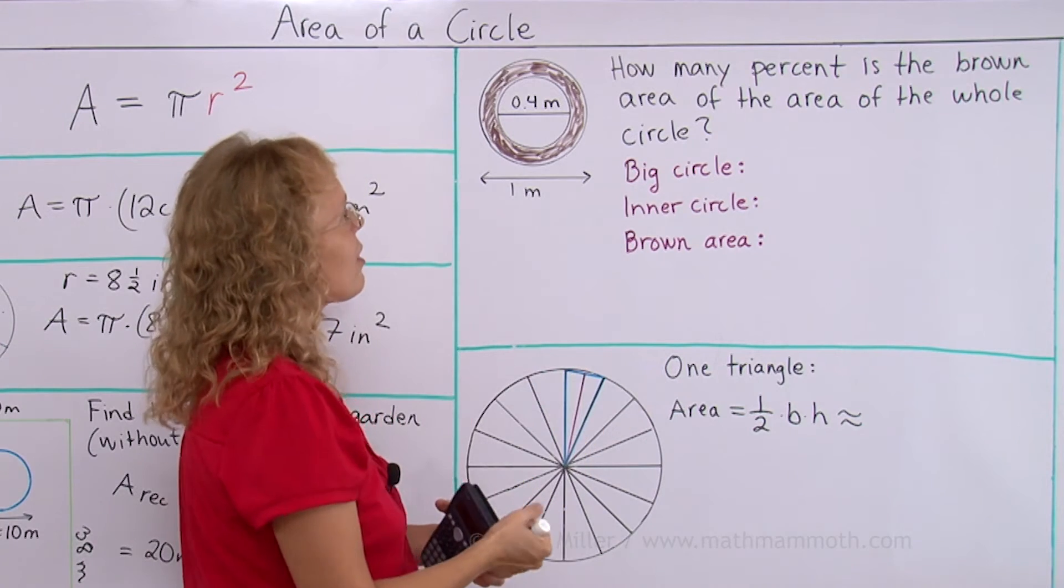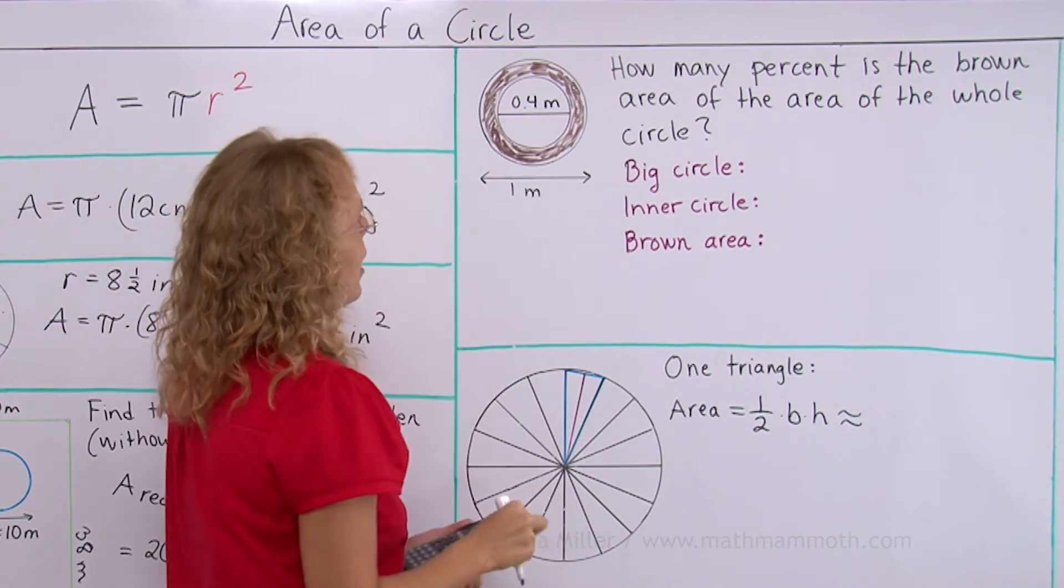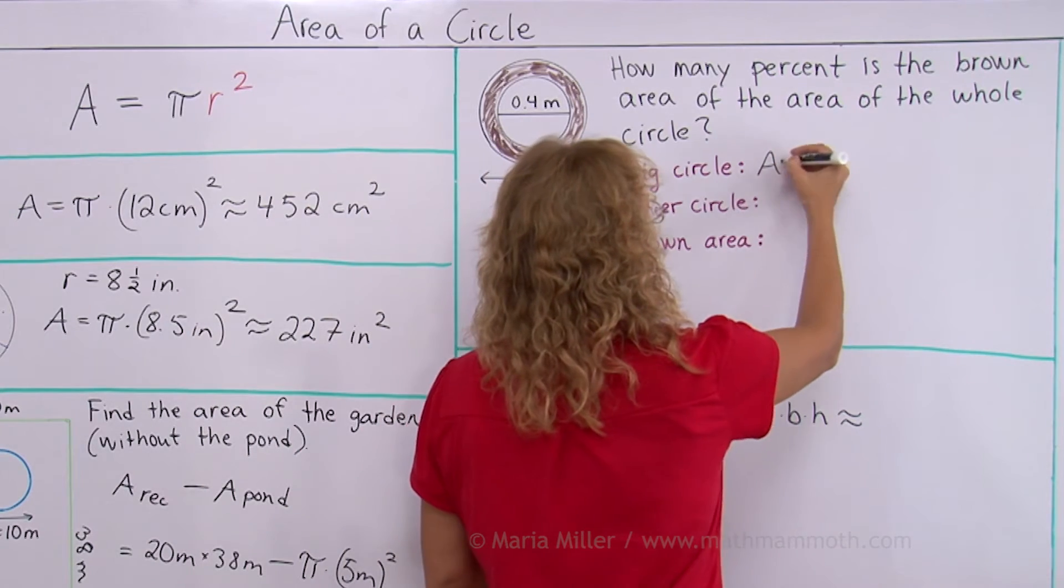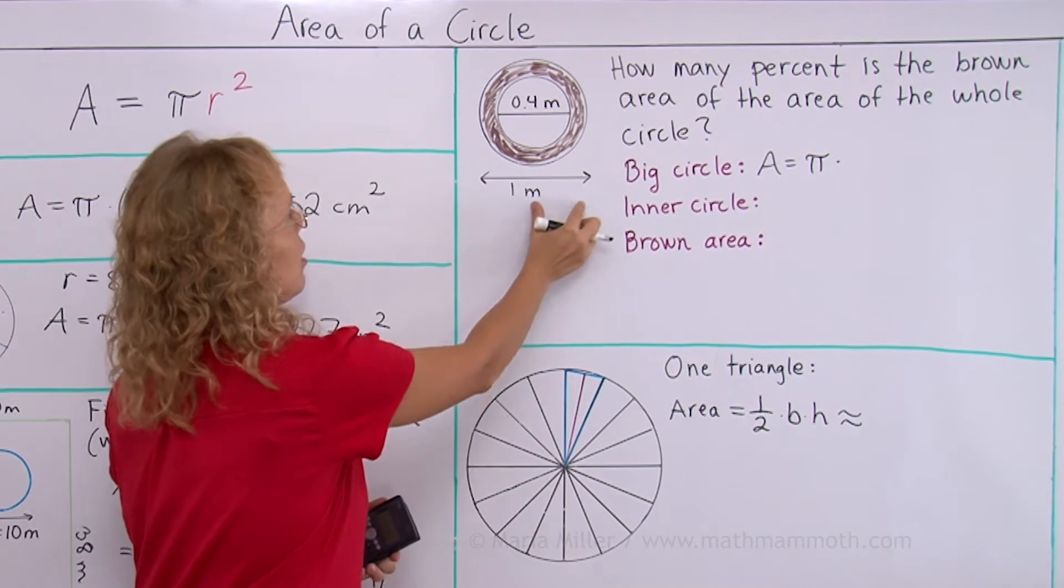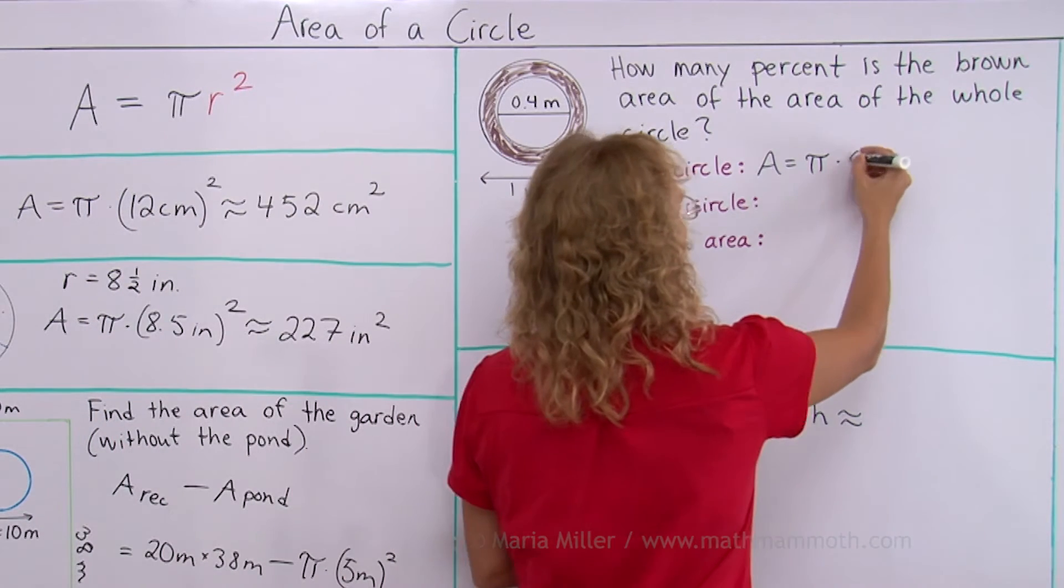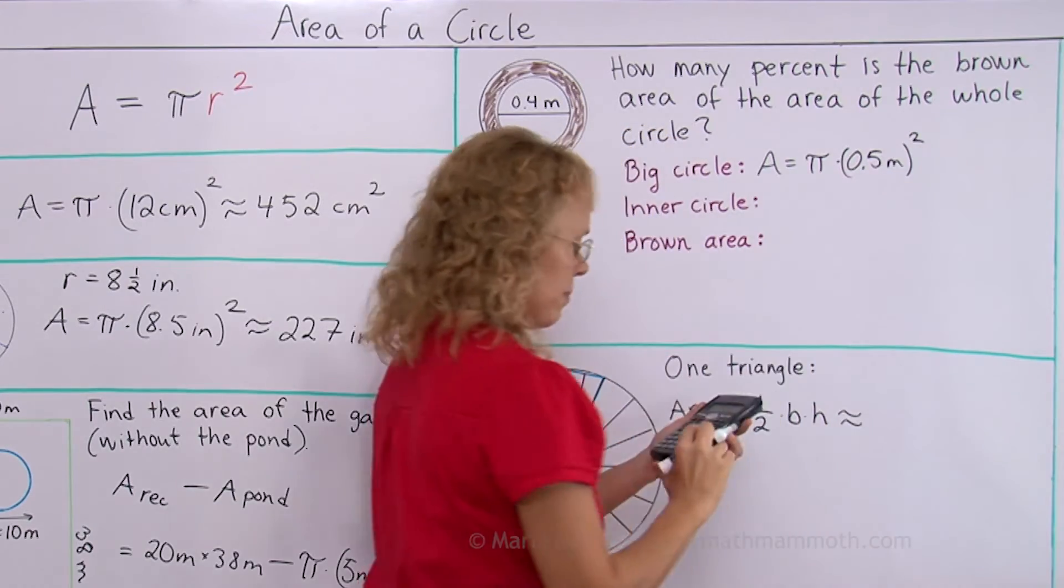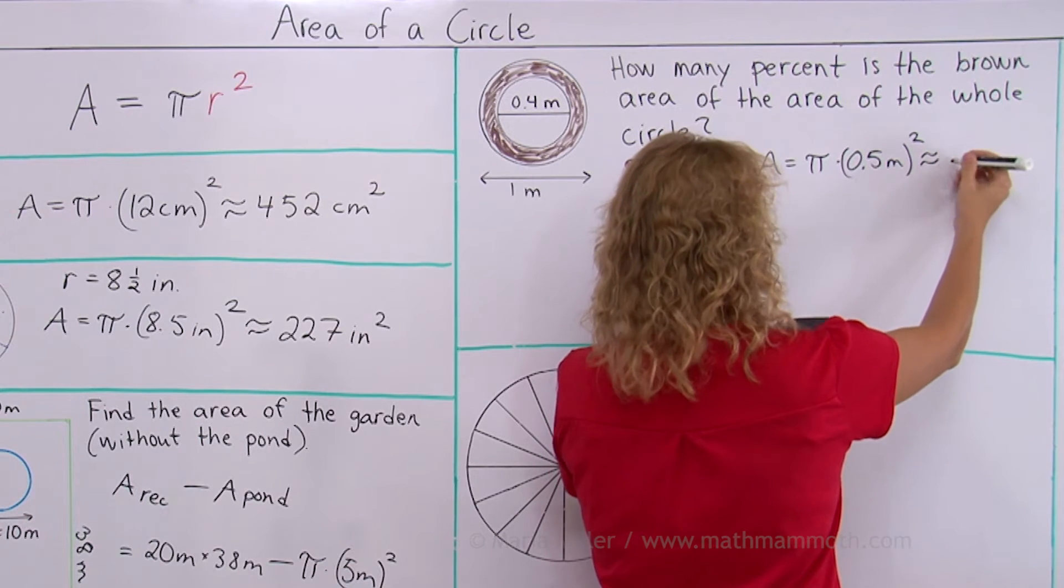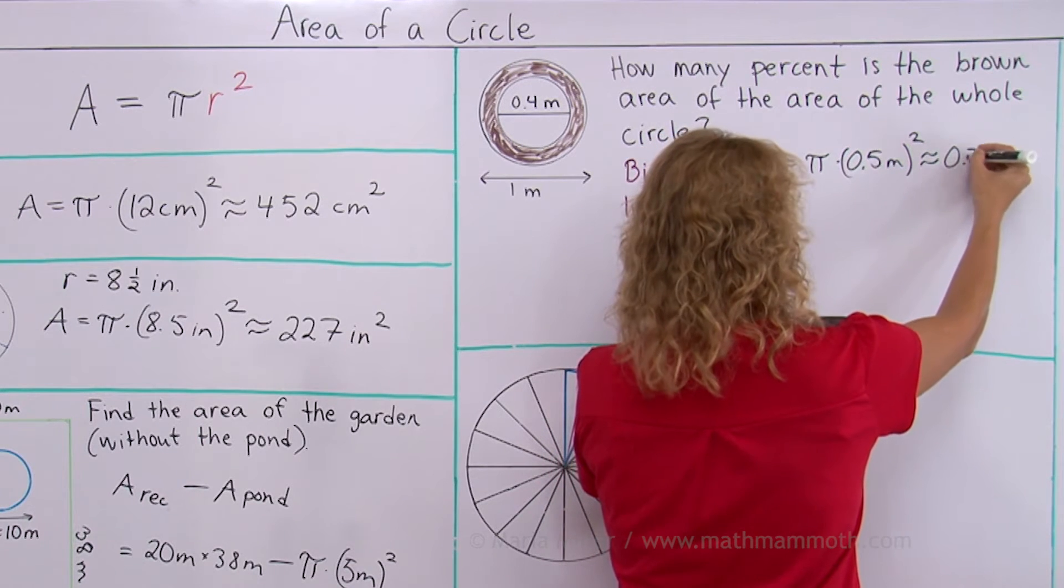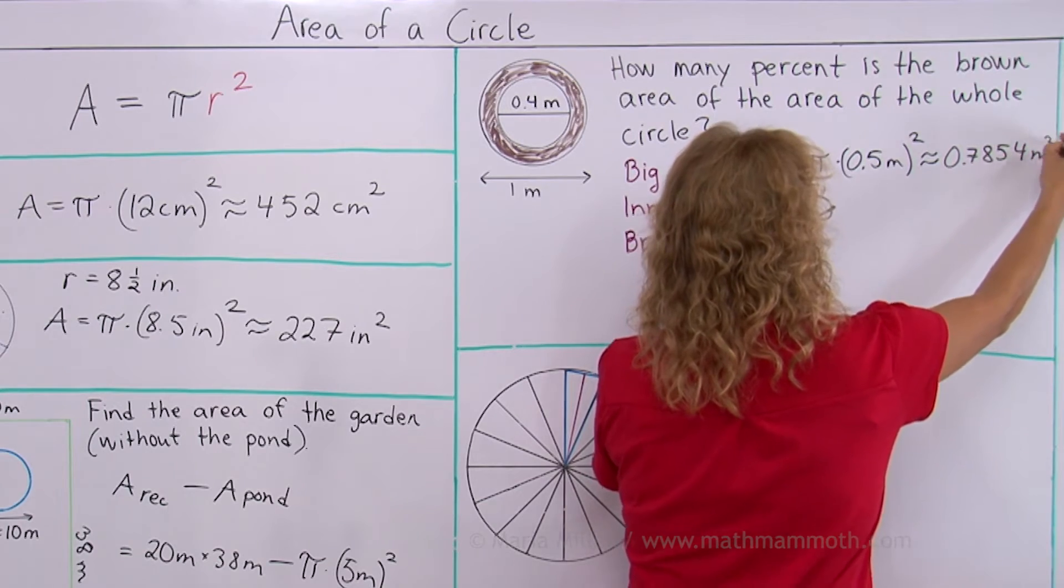Because we need to subtract, of course. Let's start with the big circle, though. Okay, it would have the area of pi times radius. The radius is now half a meter squared. So that would be about 0.7854 square meters.